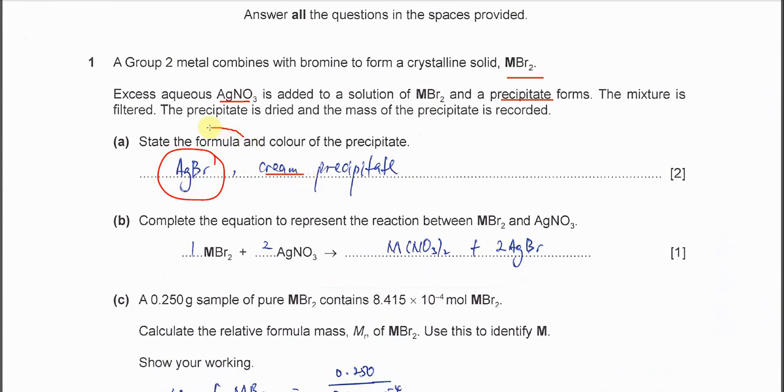The precipitate is silver bromide and the color is cream precipitate. So because it asks for formula and the color, it's AgBr and cream precipitate.